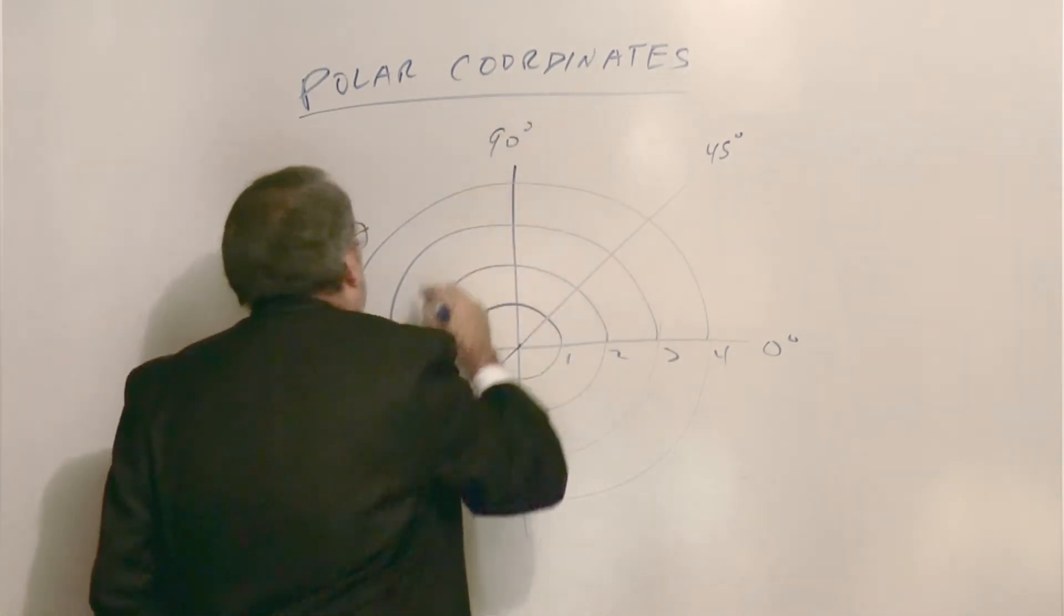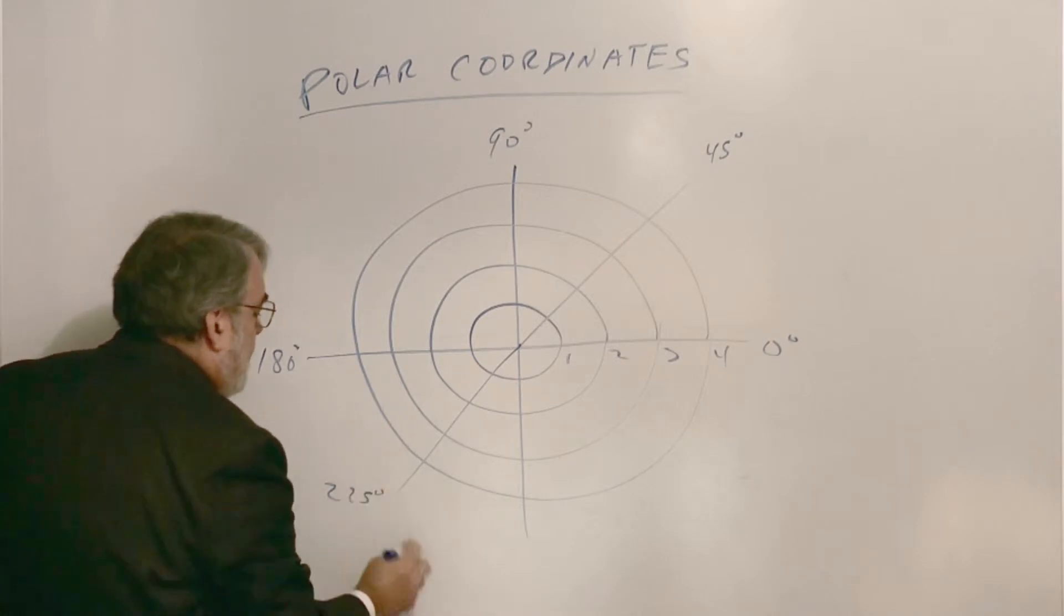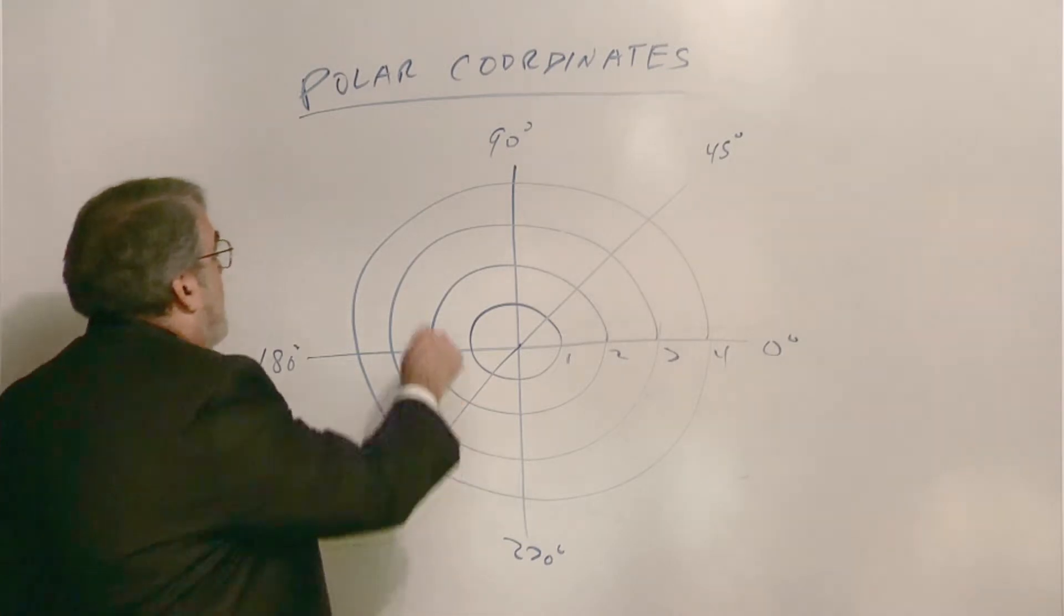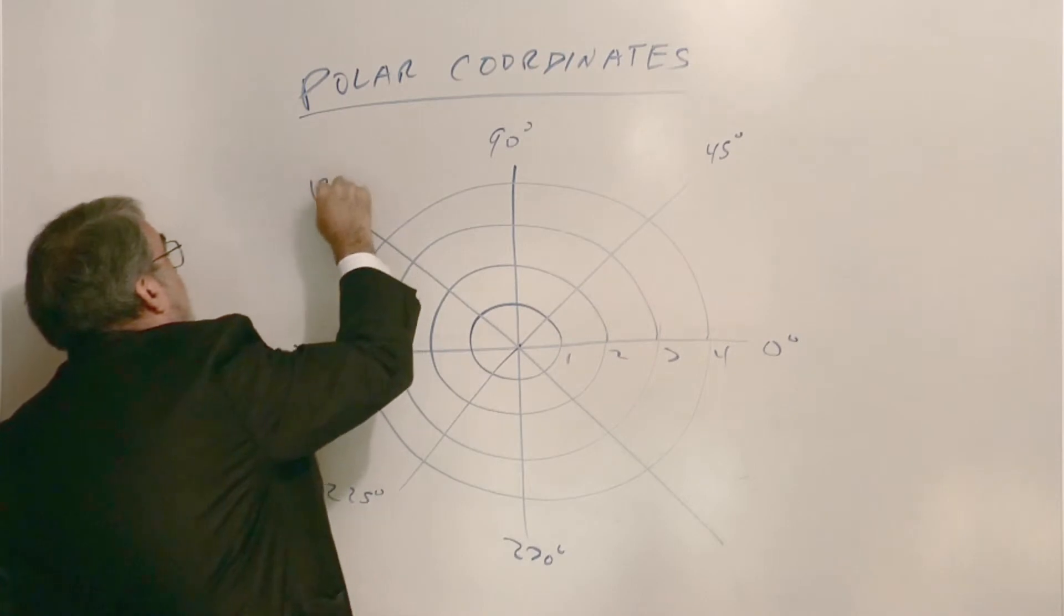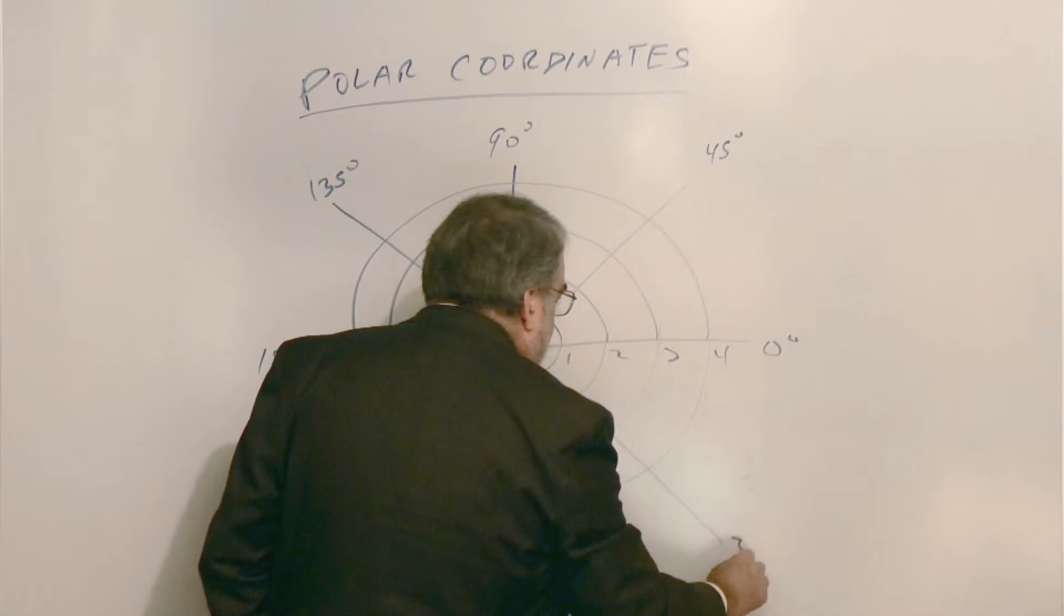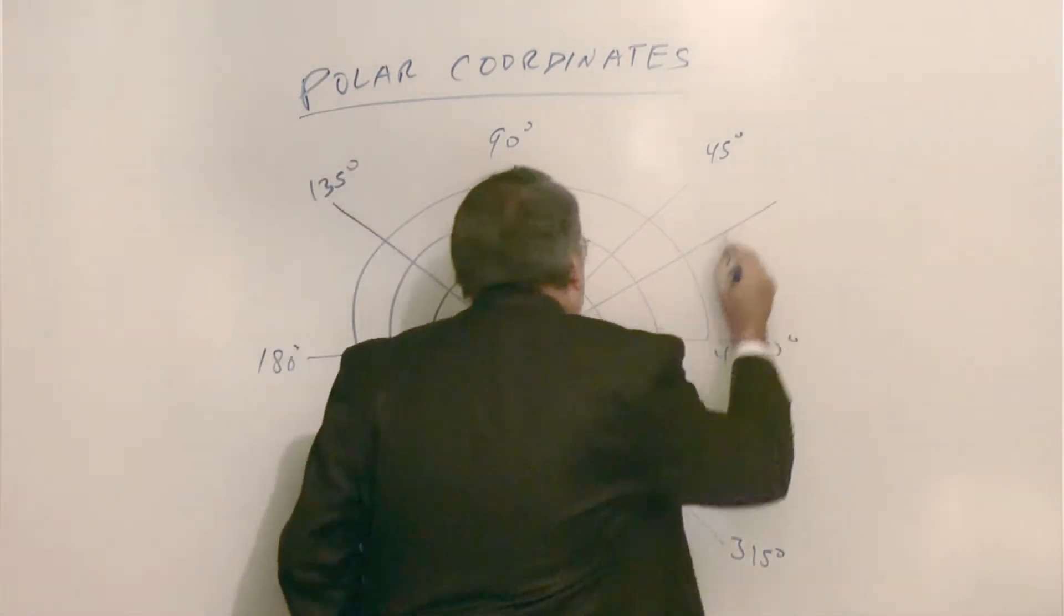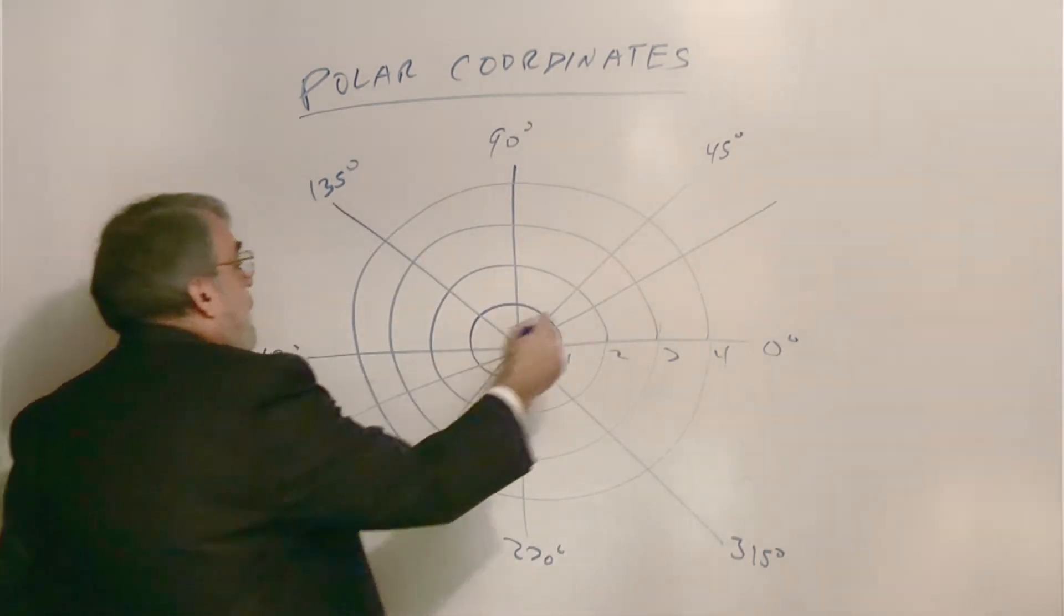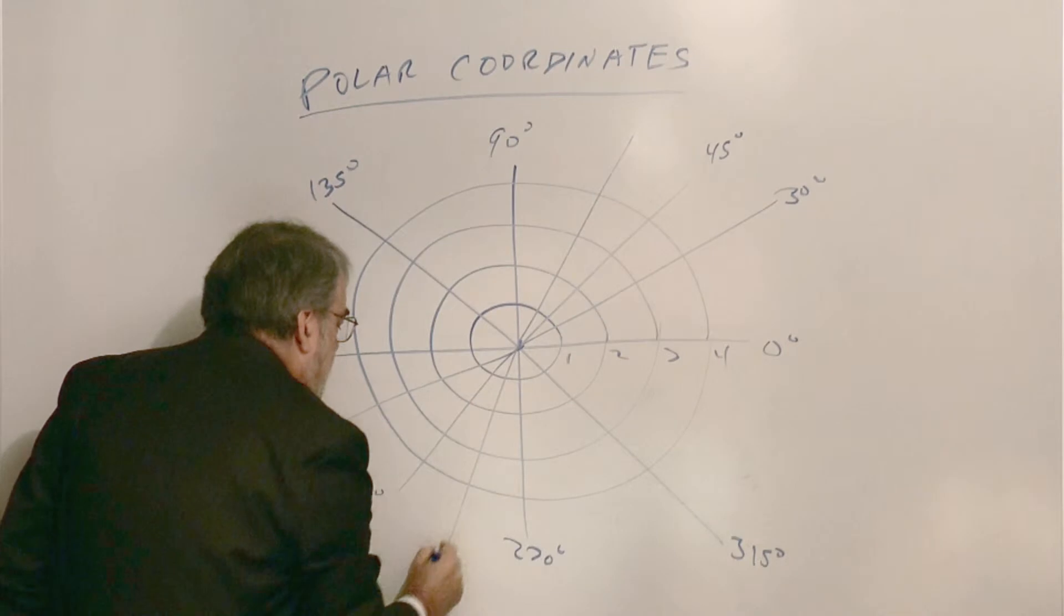And then we can do some angles. There's 45 degrees, or pi over four. This is zero degrees. This is 90 degrees, 180, and this would be 225, wouldn't it? 270. And then that's what we got for now. Let's do this line, and it's at 135 degrees, so this one would be 315 degrees. And we could go further. We could go 30 degrees.